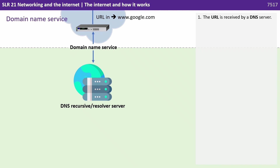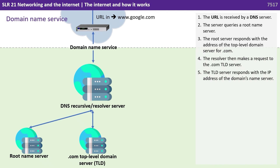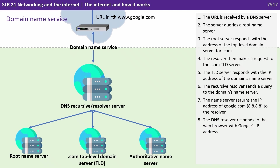The URL is received by the DNS server. The server queries a root name server. The root server responds with the address of the top level domain server for .com. The resolver then makes a request to the .com TLD server. The TLD server responds with the IP address of the domain's name server. The recursive resolver sends a query to the domain's name server, and the name server returns the IP address of Google, which is 8.8.8.8, to the resolver. The DNS resolver responds to the web browser with Google's IP address.